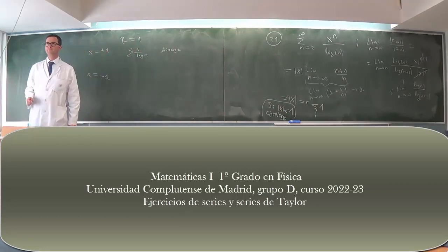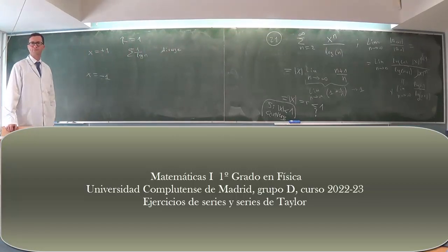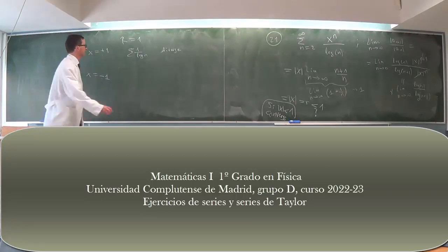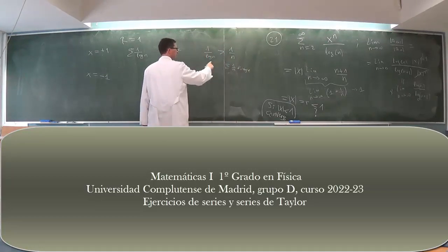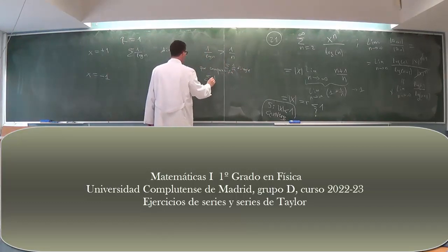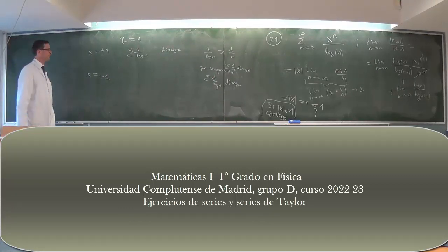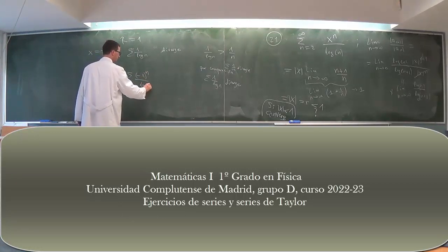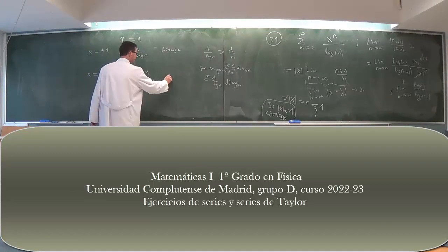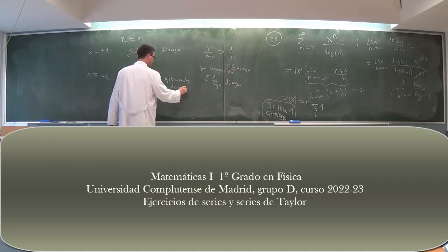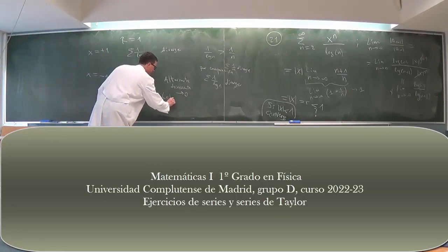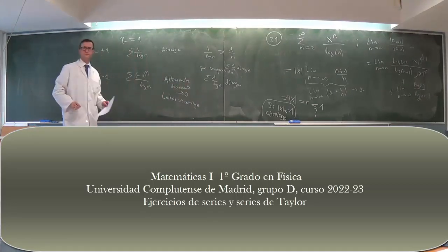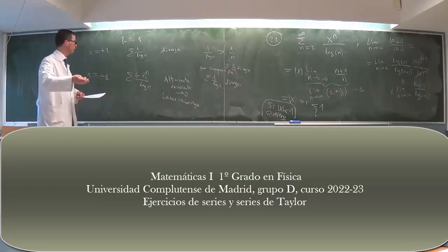¿Qué criterio usaríamos en los extremos? En x = 1: la serie 1/log(n) es mayor que 1/n, y esa serie diverge (serie armónica), luego por comparación la suma de 1/log(n) diverge. En x = -1: la serie es alternante, decreciente y tiende a cero, por lo que converge por el criterio de Leibniz. Conclusión: radio de convergencia 1, diverge en x=1 y converge en x=-1.